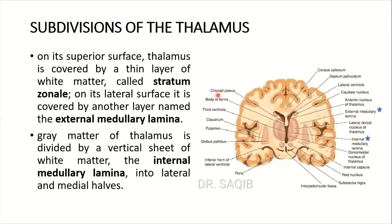The subdivision of the thalamus: on its superior surface, the thalamus is covered by a thin layer of white matter called the stratum zonale. On its lateral surface, it is covered by another layer named the external medullary lamina. On its superior surface, the thalamus is covered by the stratum zonale, which is a thin white matter layer, and laterally by the external medullary lamina.